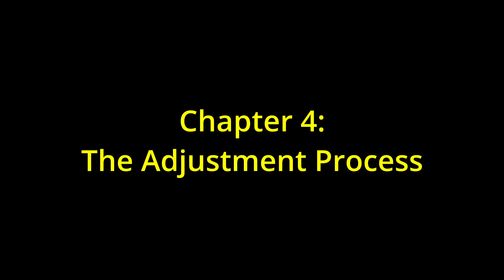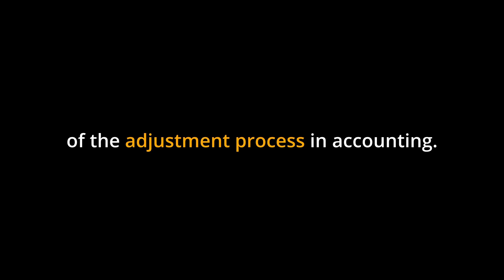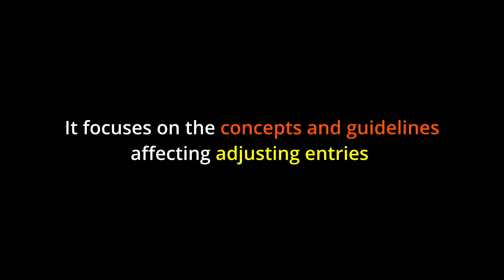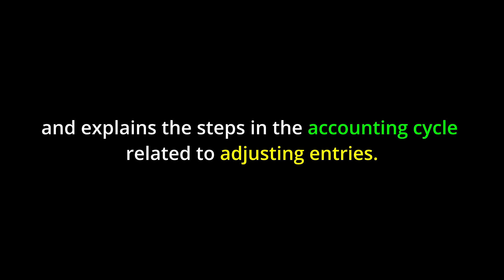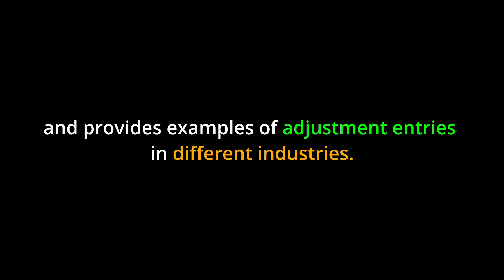Chapter four, the adjustment process. Introduction. Chapter four provides a comprehensive overview of the adjustment process in accounting. It focuses on the concepts and guidelines affecting adjusting entries and explains the steps in the accounting cycle related to adjusting entries. The chapter emphasizes the importance of accrual accounting and the accounting period, and provides examples of adjustment entries in different industries.